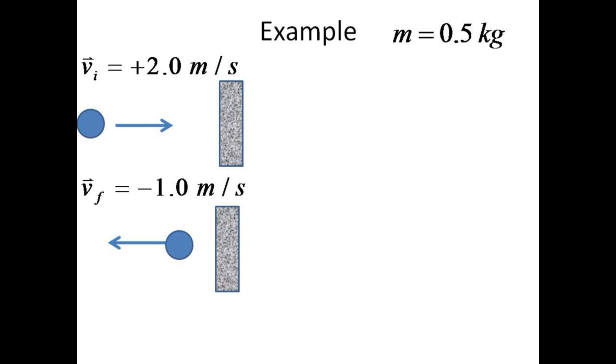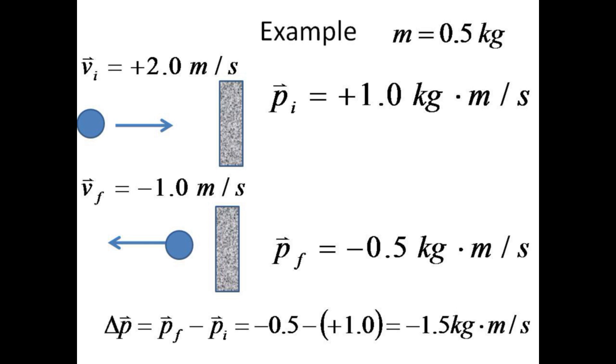Here's a quick numerical example. Suppose that a one-half kilogram object collides with two meters per second of initial velocity to the right and rebounds with only minus one meters per second to the left. The initial momentum is just plus one kilogram meter per second, the final momentum is minus point five kilograms meters per second, and the change in momentum is minus one point five kilograms meters per second.